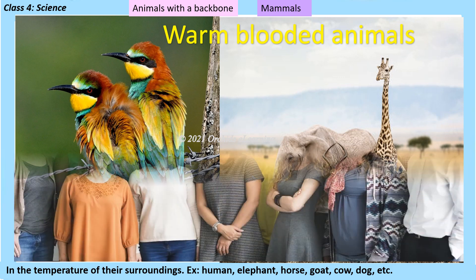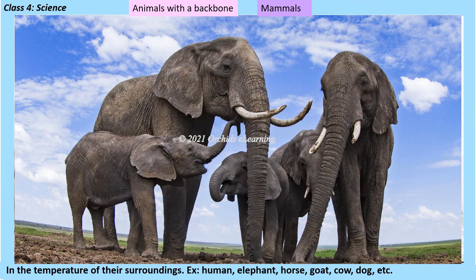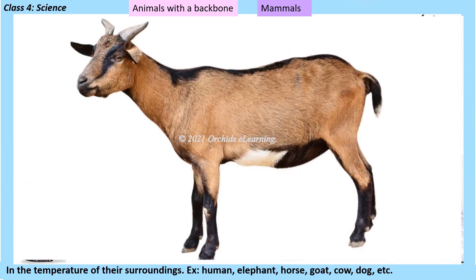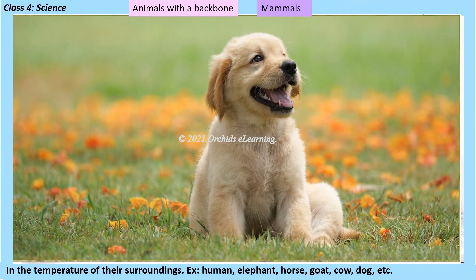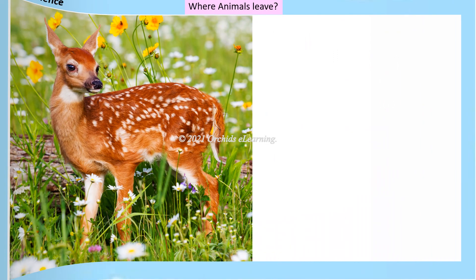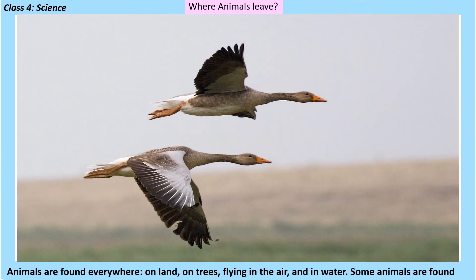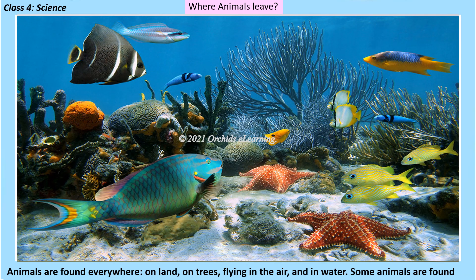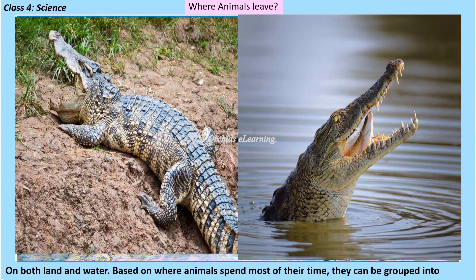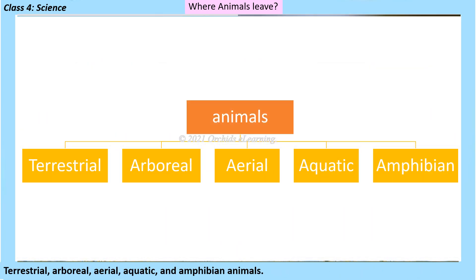Examples of mammals include human, elephant, horse, goat, cow, and dog. Animals are found everywhere — on land, on trees, flying in the air, and in water. Some animals are found on both land and water. Based on where animals spend most of their time, they can be grouped into terrestrial, arboreal, aerial, aquatic, and amphibian animals.